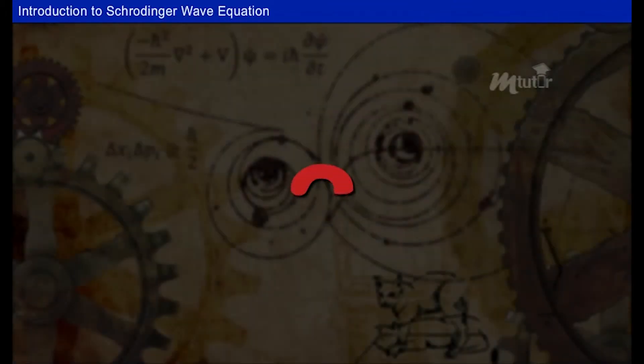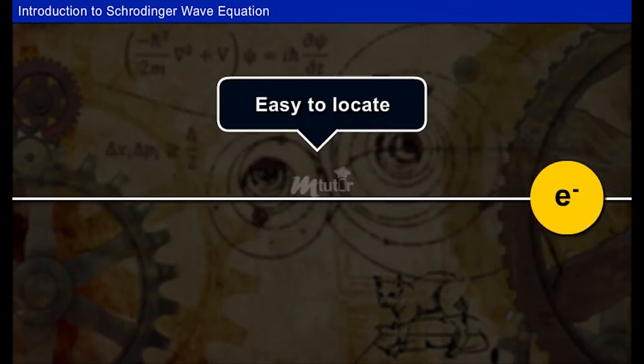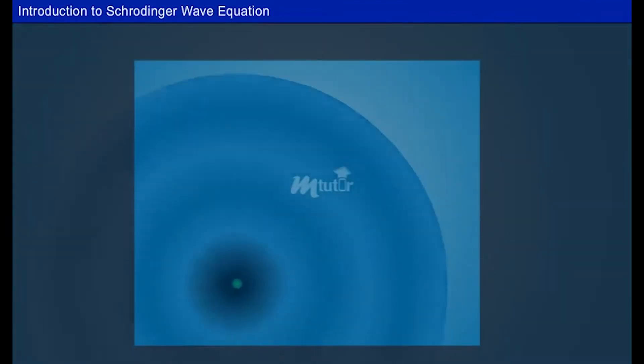So what does Schrödinger Wave Equation describe? When an electron behaves like a particle, it would move in a straight line and it is easy to find within a certain area. But how to find the electron when it behaves in wave format?